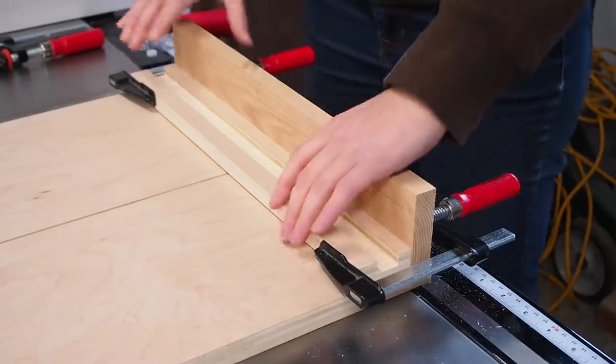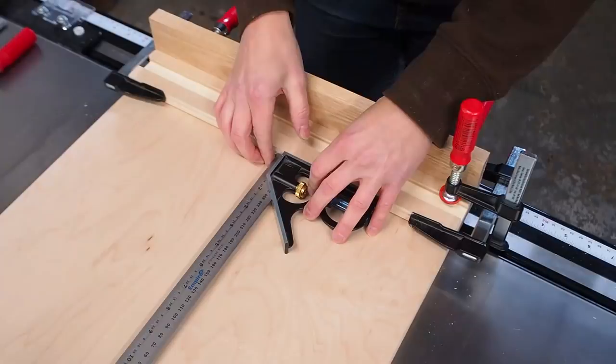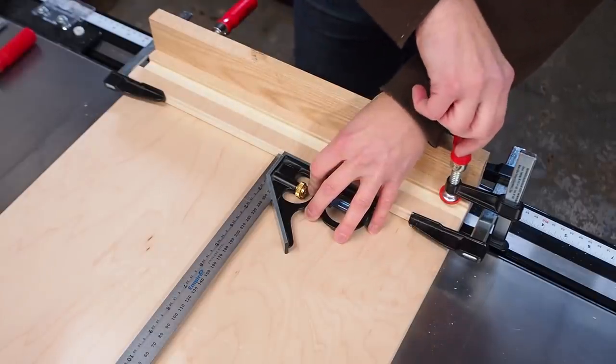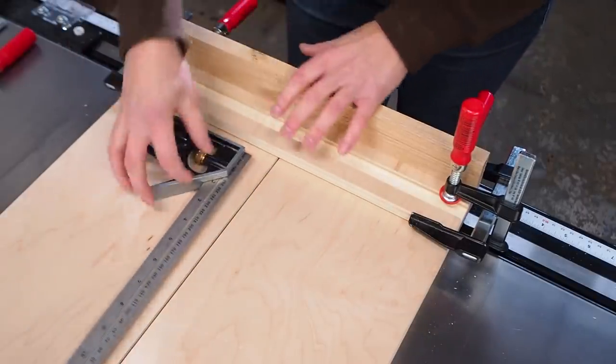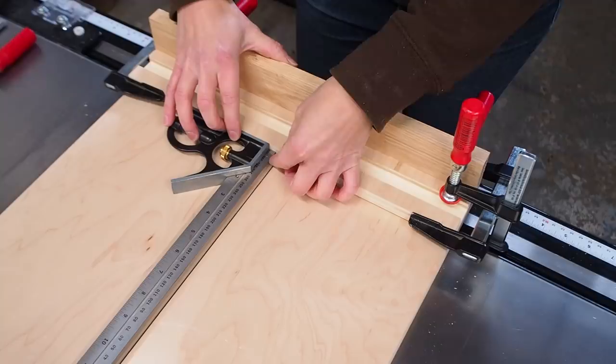The fence needs to be square to the blade and there are various methods to do this like the five cut method. I'm not going to cut anything long with this sled so I'm comfortable just using a square to line it up visually.